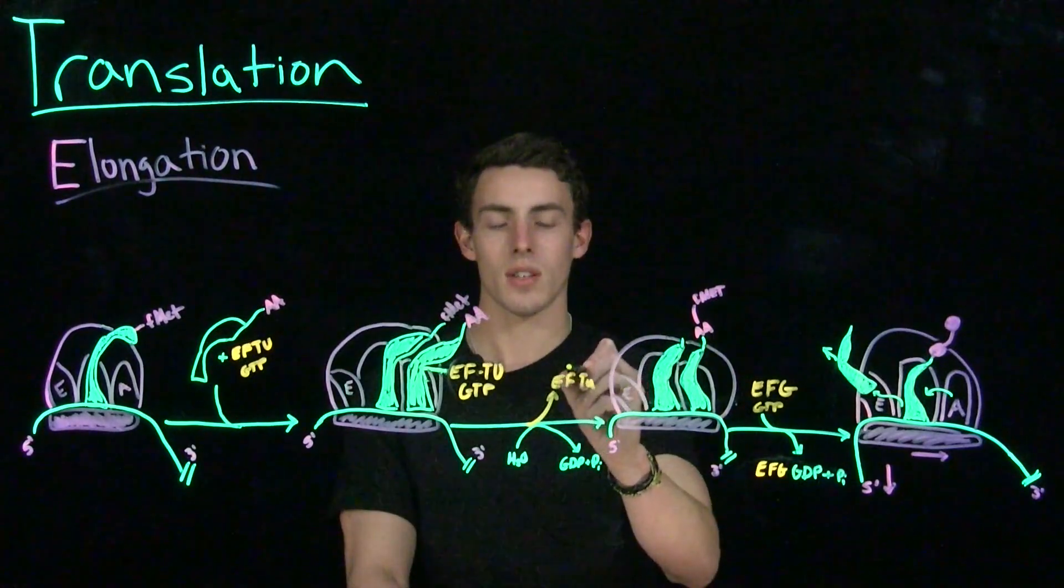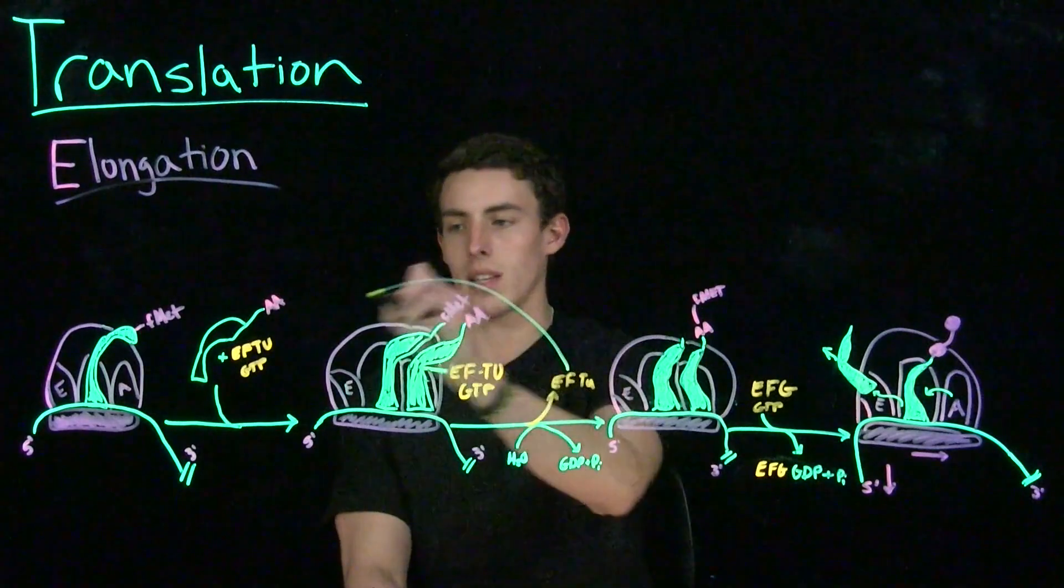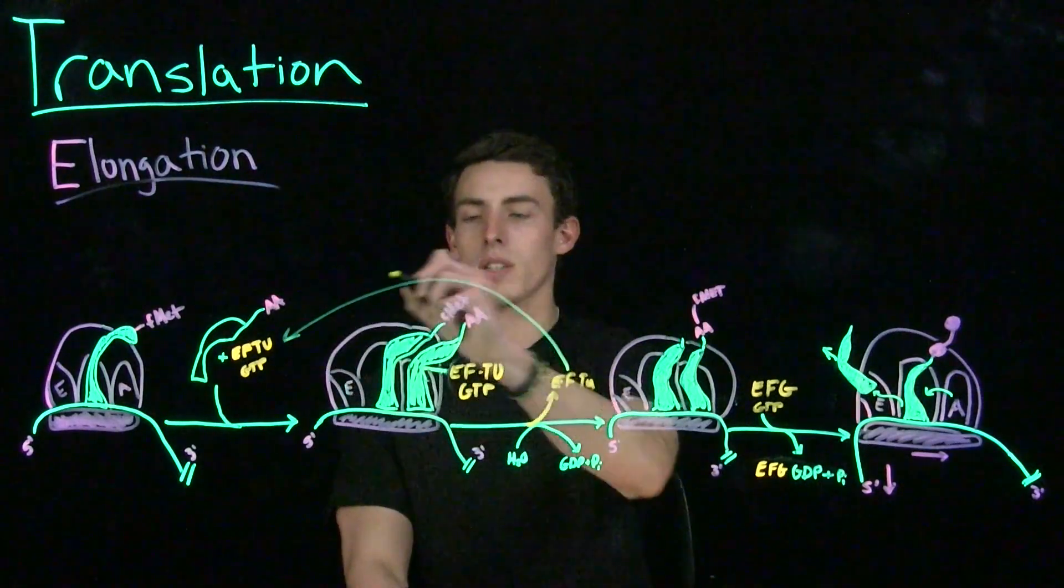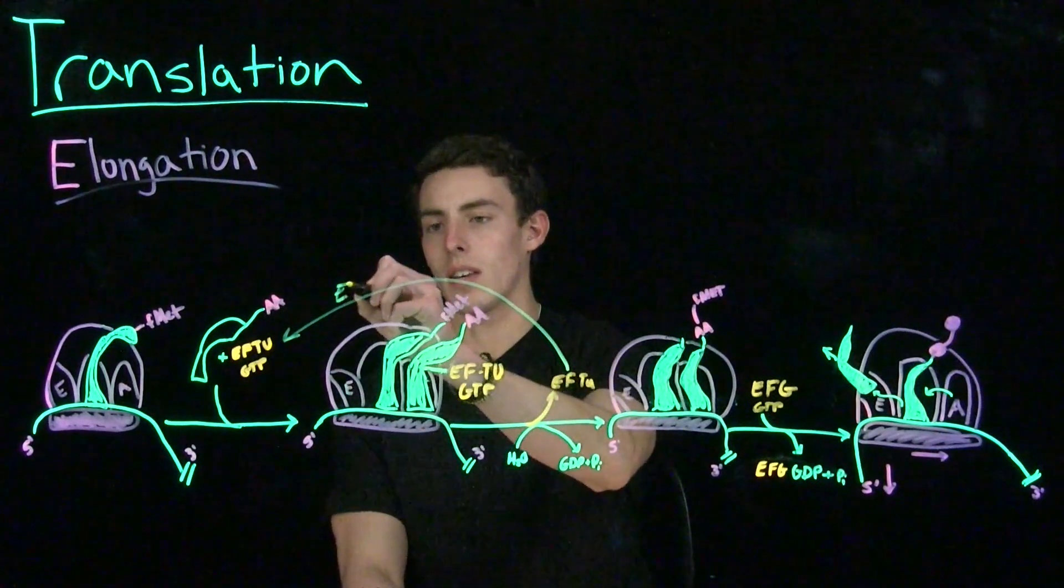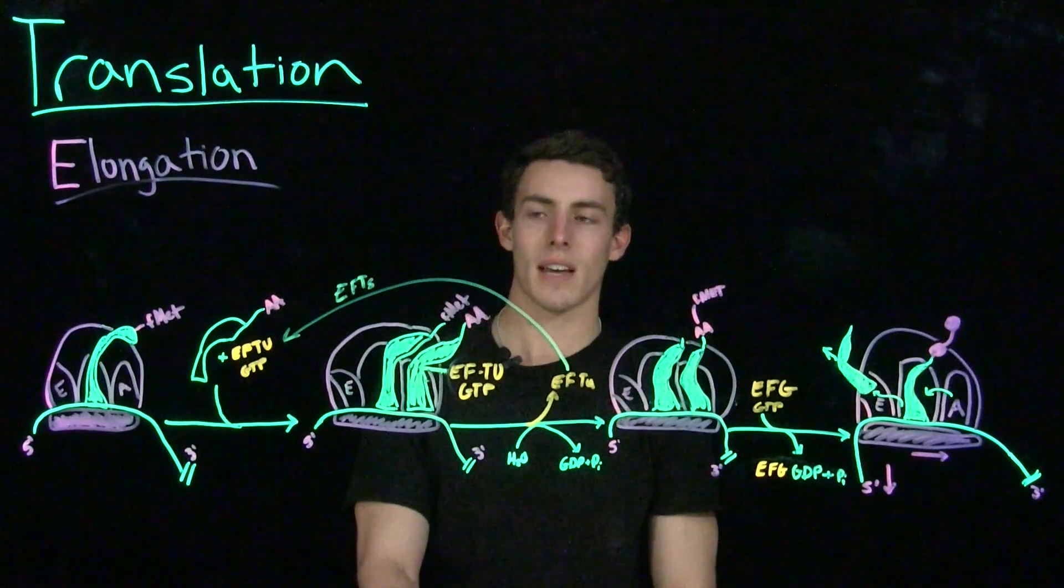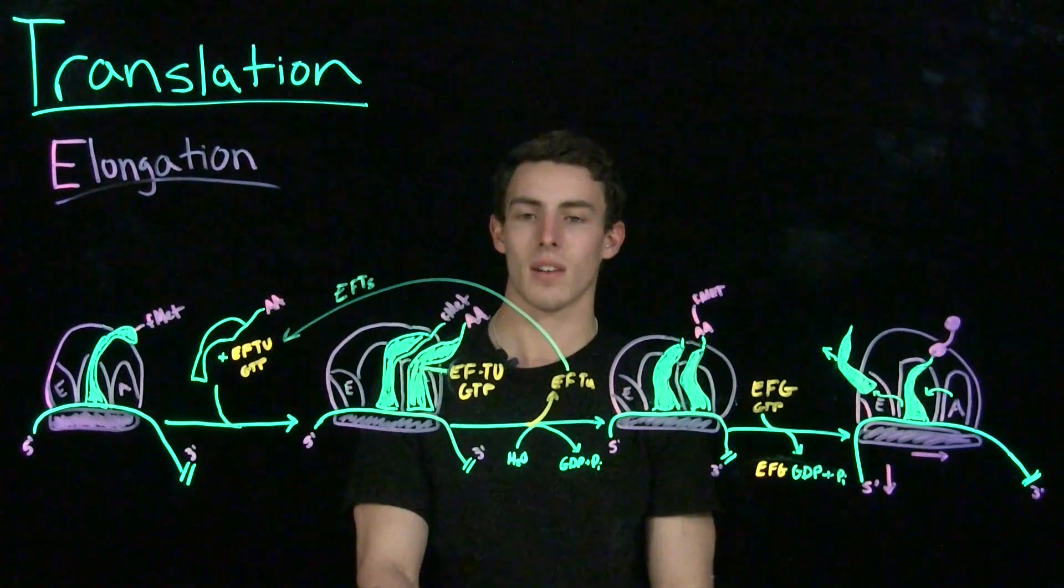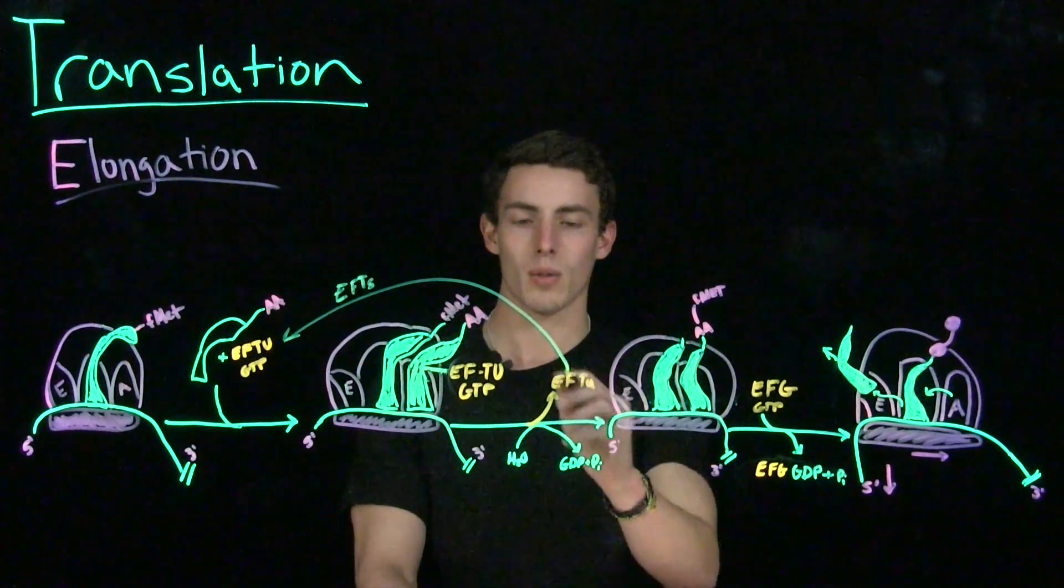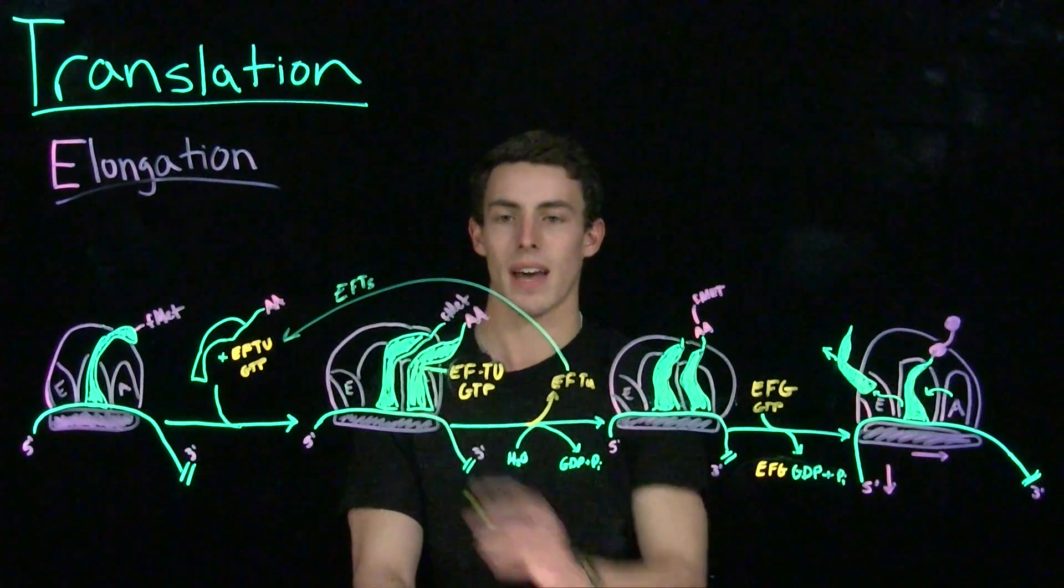Additionally, EFTU can be recycled back to EFTU GTP using another elongation factor called elongation factor TS. Elongation factor TS is essentially like the recycling elongation factor because it helps recycle EFTU back to its active role.